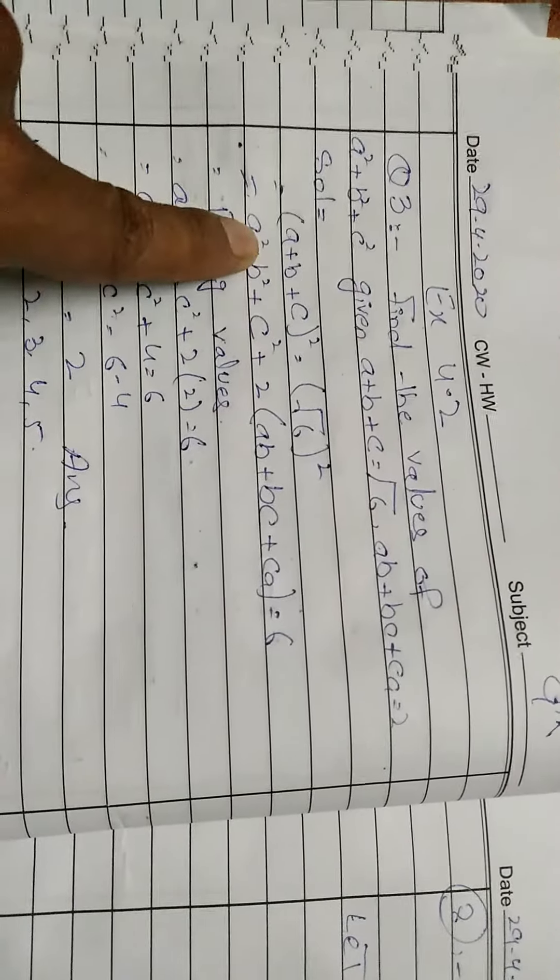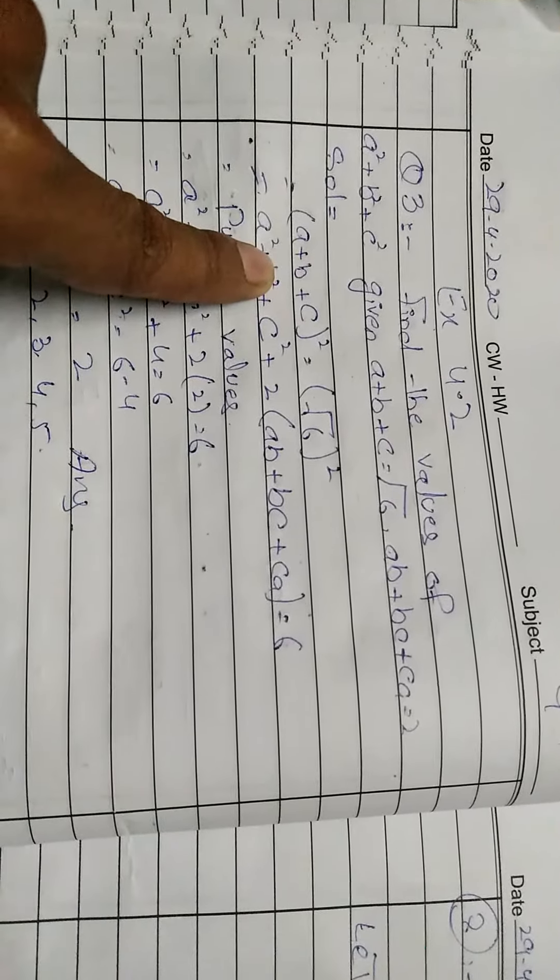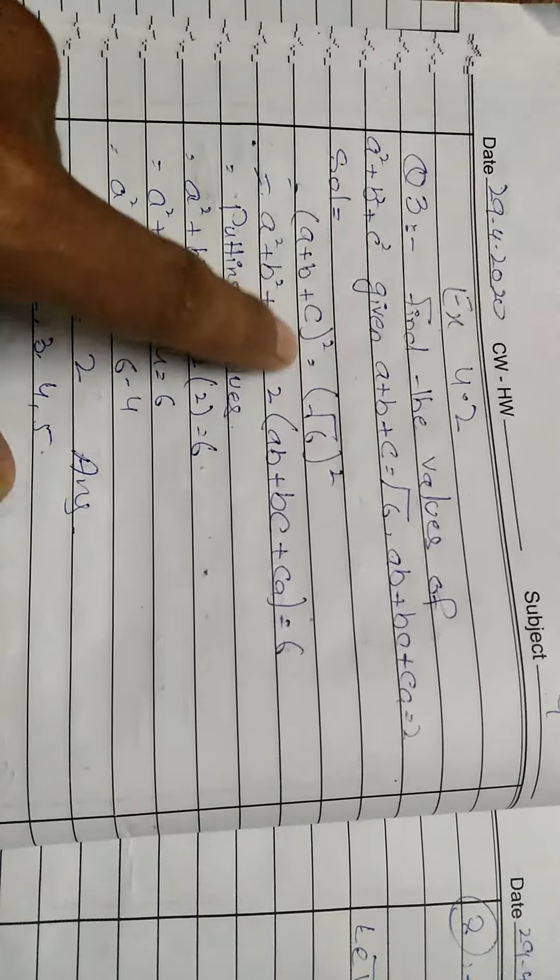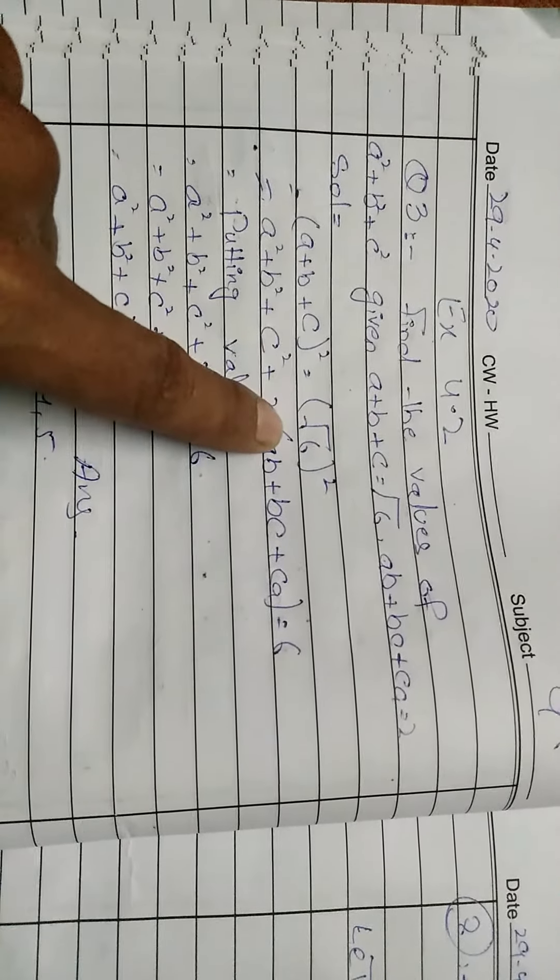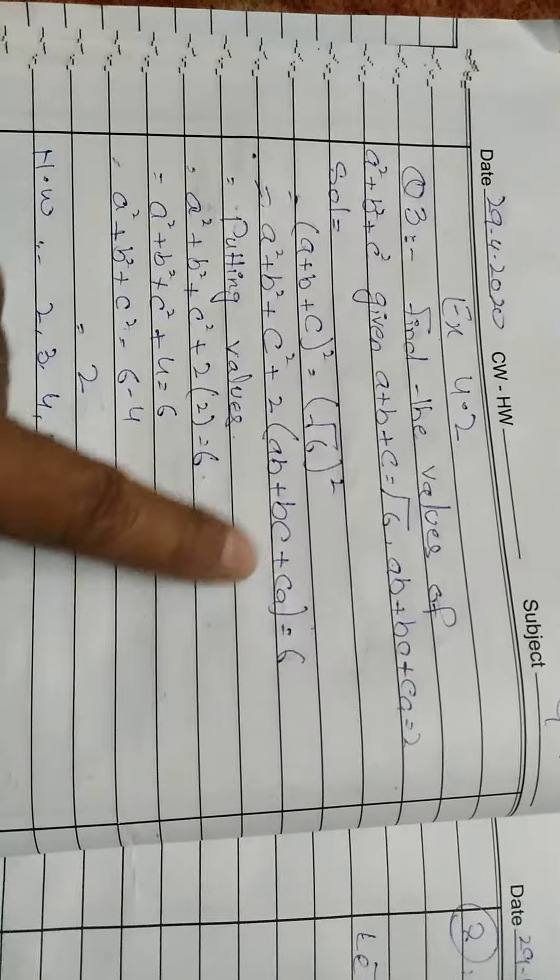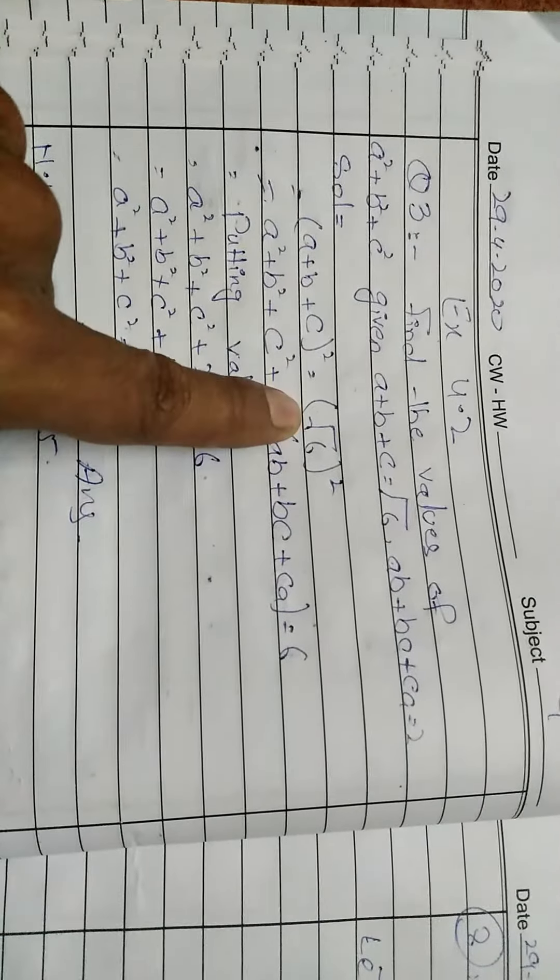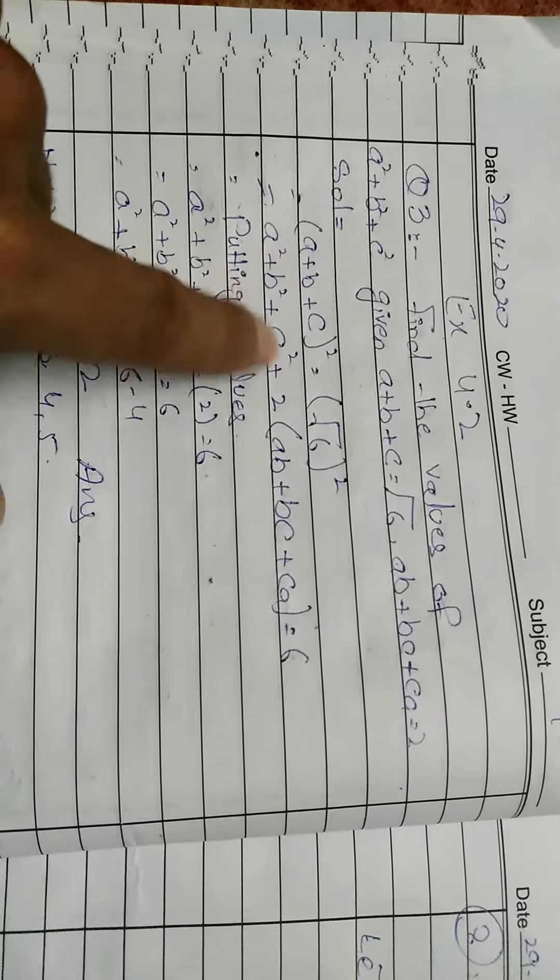Now for the next part: starting with (a + b + c)² = 6, we expand this as a² + b² + c² + 2(ab + bc + ca) = 6.